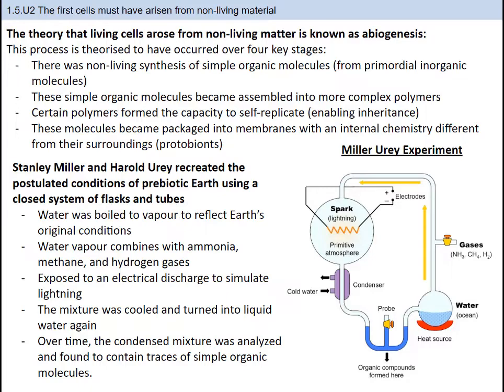So what exactly is this theory of life from nonliving material? Well, this process is theorized to occur over four stages. First, there was nonliving synthesis of simple organic molecules from primordial inorganic molecules. These simple organic molecules became assembled into more complex polymers. Certain polymers formed the capacity to self-replicate, which enabled inheritance. Lastly, these molecules became packaged into membranes with an internal chemistry different from their surroundings, and these are called protobions.